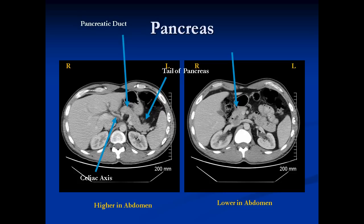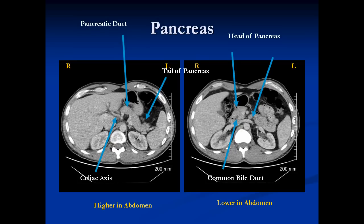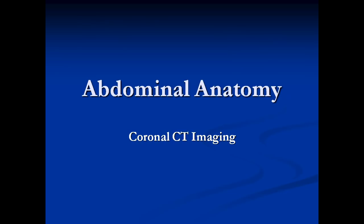Going to the next image, which is lower down, we see the head of the pancreas. In the middle of the head, we see this little black structure — the common bile duct, which comes down through the head of the pancreas to empty into the duodenum. The duodenum sits right next to the head of the pancreas on the right side. This vascular structure going across the aorta is the left renal vein, which almost always passes in front of the aorta, though in some individuals it goes behind.